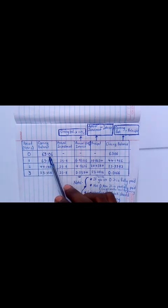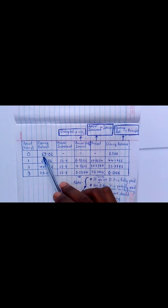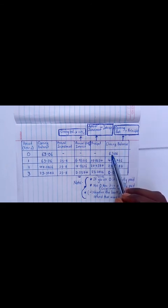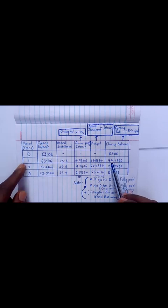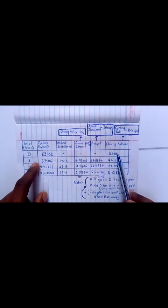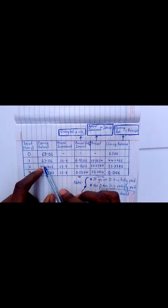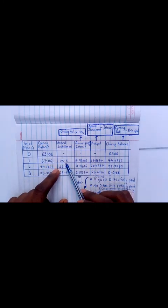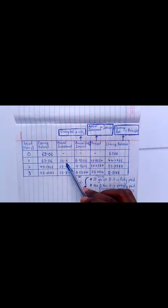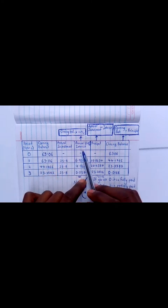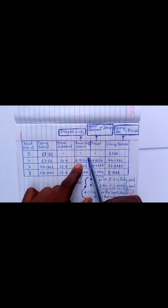When paying off this loan, I'm supposed to pay it off in a period of three years. My closing balance in year zero is going to be my opening balance in year one, which is 63.06. My annual installment is 25.8, which is constant. The annual interest is the closing balance times 11 percent, giving me 6.9366.